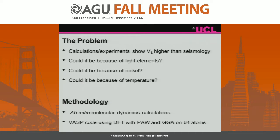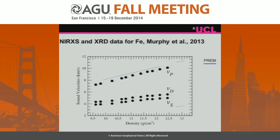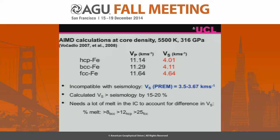The method used is ab initio molecular dynamics calculations. Here are the experimental results of Caitlin and her co-workers, which clearly show that the shear wave velocity is much higher than the PREM value. This is also seen in calculations, where shear wave velocities are much higher than PREM — by 15 to 20%.